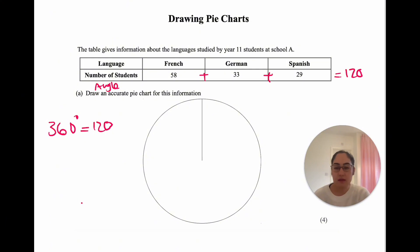If 360 represents 120 students, what would one student be represented by? We divide by 120 to go from 120 to 1, and do the same to 360. 360 divided by 120, simplify by dividing by 10, we get 36 over 12. Simplify again, divide both by 6, we get 6 over 2. 6 divided by 2 equals 3. So one student is represented by 3 degrees.